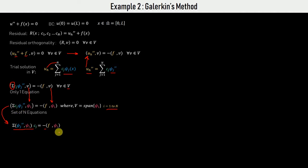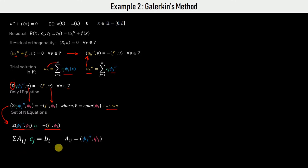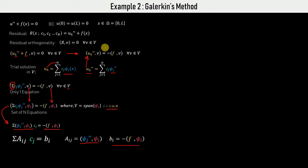This can be written in matrix form where each A_ij is the inner product term and CJ is what we want to calculate using the B_i's. In this complete analysis we haven't yet chosen the basis functions.